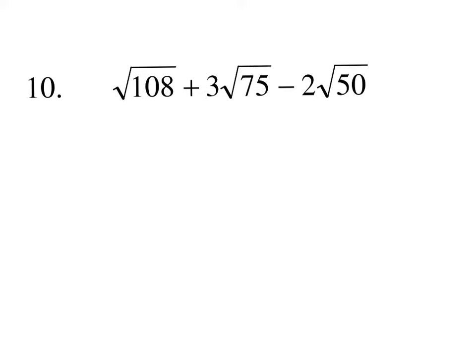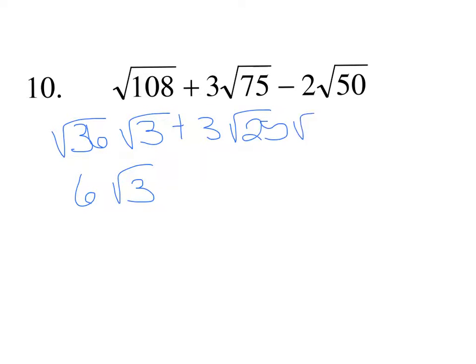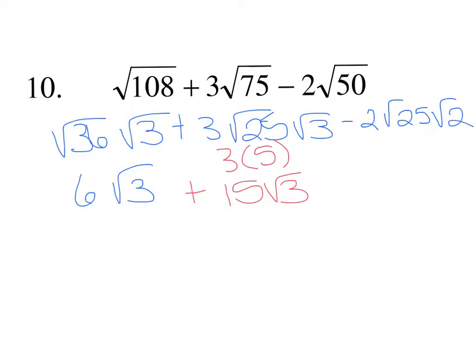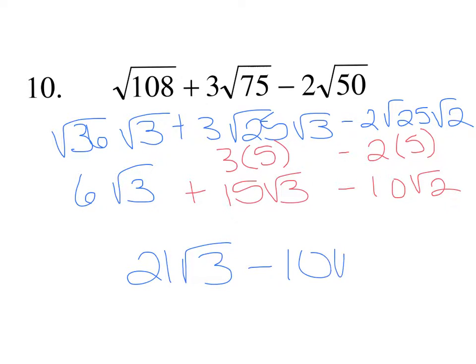On number 10 it's more practice simplifying with more terms. 108 is 36 times 3, giving 6 square root of 3. 75 is 25 times 3, giving 3 times 5 or 15 square root of 3. 50 is 25 times 2, giving 2 times 5 or 10 square root of 2. The first two terms are both square root of 3, so I can add 6 and 15 to get 21 square root of 3. The last term, 10 square root of 2, just tacks on since it's a different radicand.